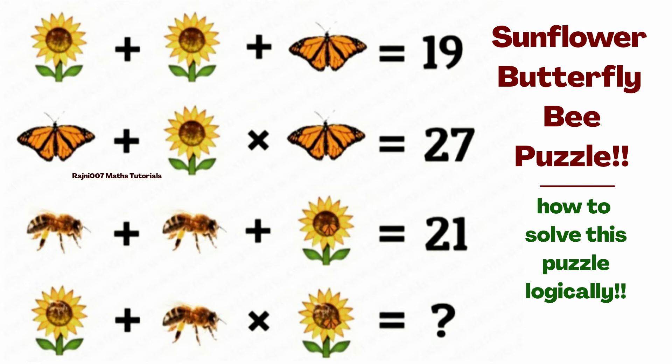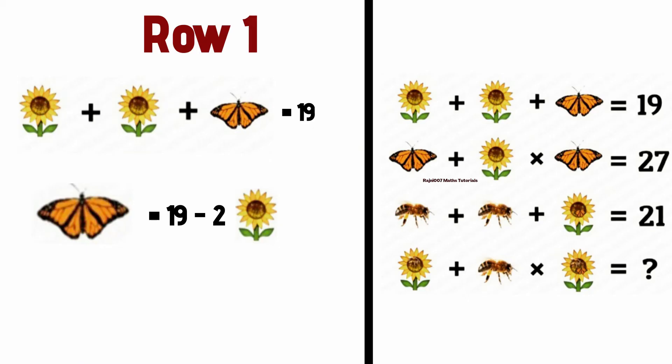Let's hope that you have also tried it. Let's move on the solution step by step. First, we will take the first row. What value is two times sunflower plus butterfly? The value is 19. So here we will get the value of butterfly. What value is 19 minus two times sunflower, which we will use in row 2.